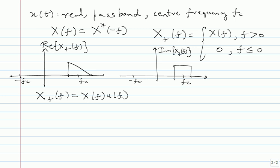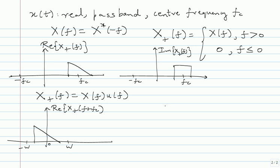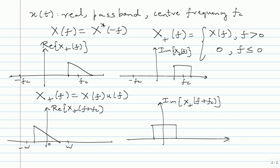The next step is to shift x_+(f) to baseband. To shift in frequency, I replace f with f + fc. So x_+(f + fc) gives a baseband signal. The real part of x_+(f + fc) will be centered around 0, within minus W to plus W, and the imaginary part will similarly be baseband. In the time domain, this is equivalent to multiplying by a suitable complex exponential.